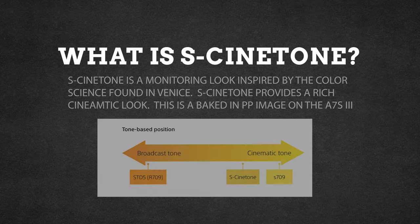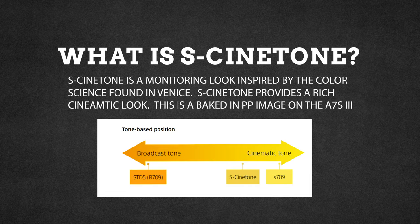So what is S-Cinetone? S-Cinetone is Sony's picture profile taken from the color science of the CineAlta Venice. While Venice in S709 provides images that closely match the film color you see in movies, S-Cinetone gives a cinematic look in both tone and color for the video and digital world. It gives similar colors to Venice but with increased contrast so it can be uploaded and viewed directly with minimum to no color grading whatsoever — basically what you see from your camera is what you'll get in your editing software.